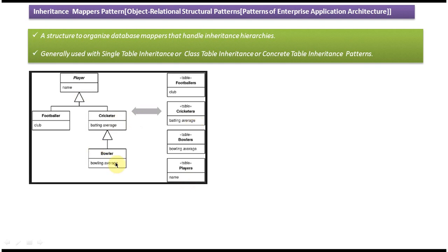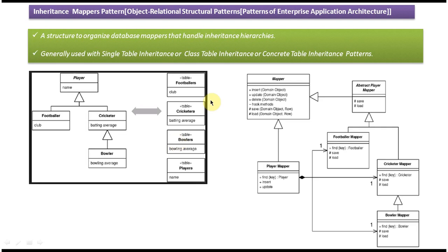Suppose a user wants to store Bowler information — since Bowler extends Cricketer and Cricketer extends Player, we have to store in three tables: the Player table, Cricketer table, and Bowler table. For this hierarchy, the mappers will look like this: a Player mapper for the Player class, a Footballer mapper, a Cricketer mapper, a Bowler mapper, and a common mapper superclass with shared methods.